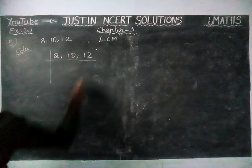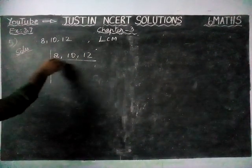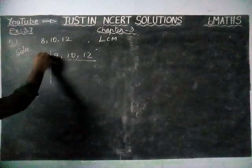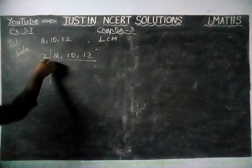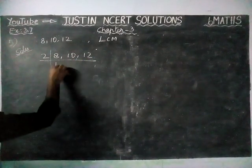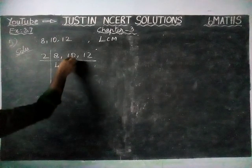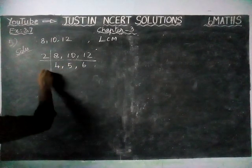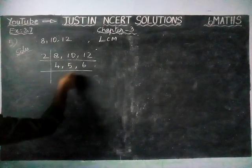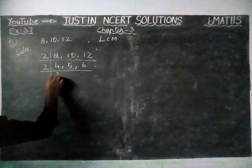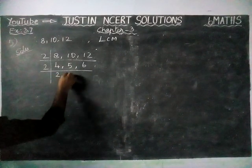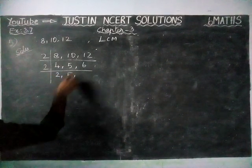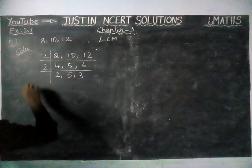We are going to divide by a common number. Since 8, 10 and 12 are all divisible by 2, we divide: 4 twos are 8, 5 twos are 10, 6 twos are 12. Again dividing by 2: 2 twos are 4, 5 cannot be divided so we write it as is, 3 twos are 6.